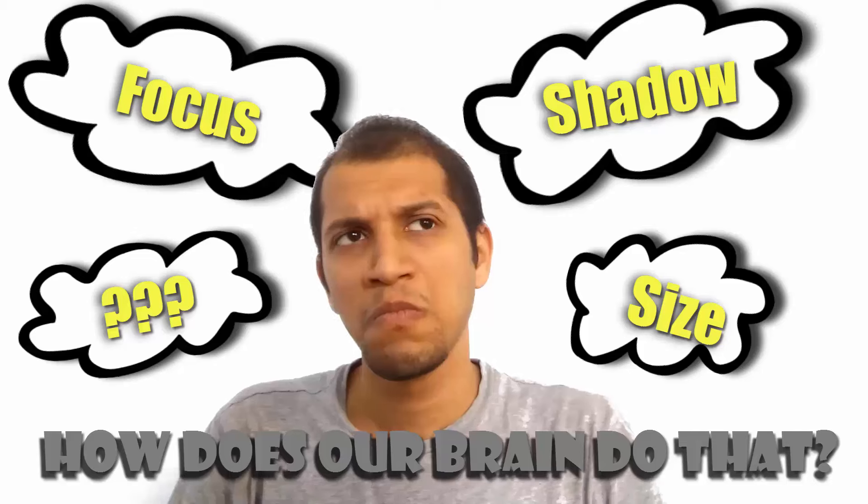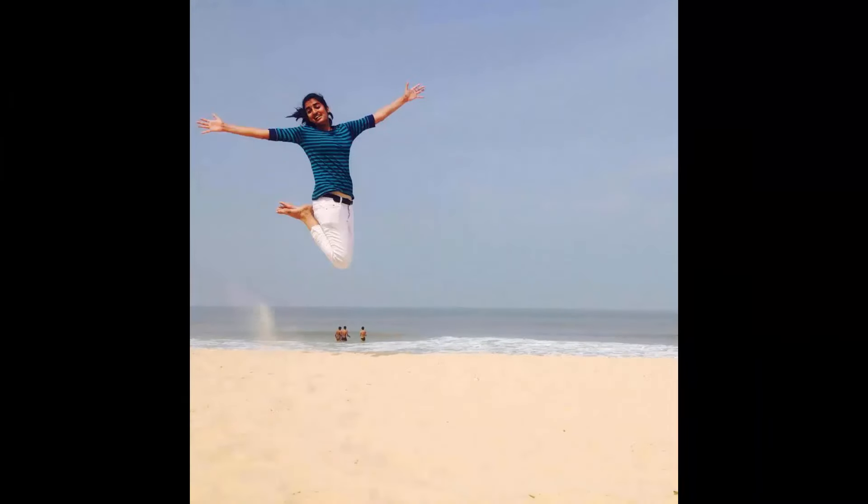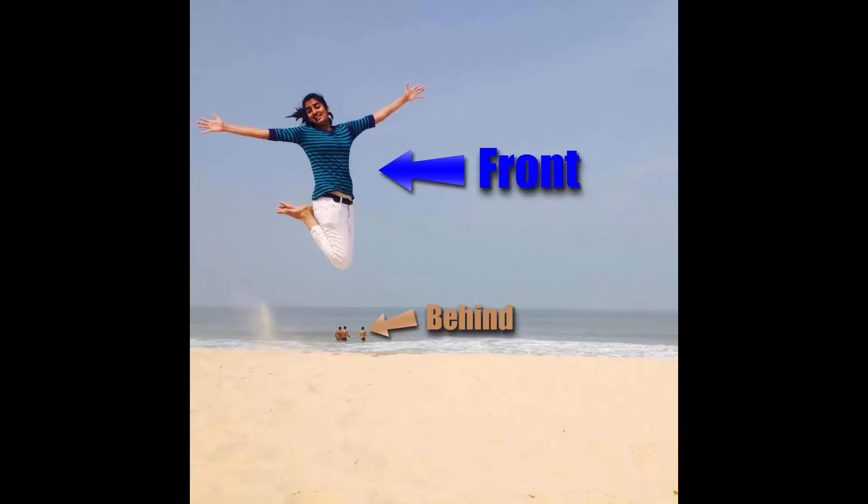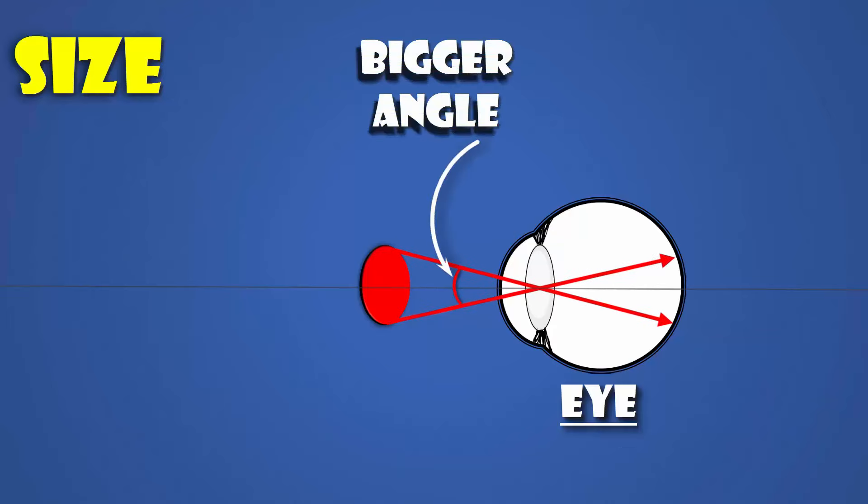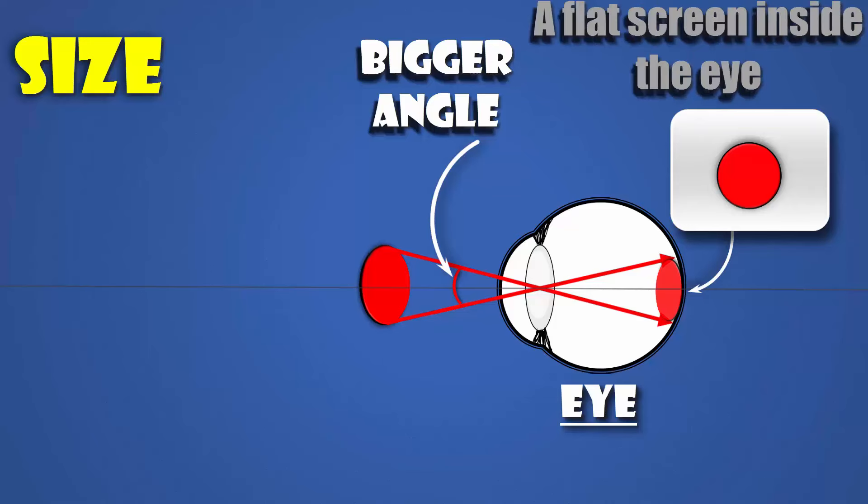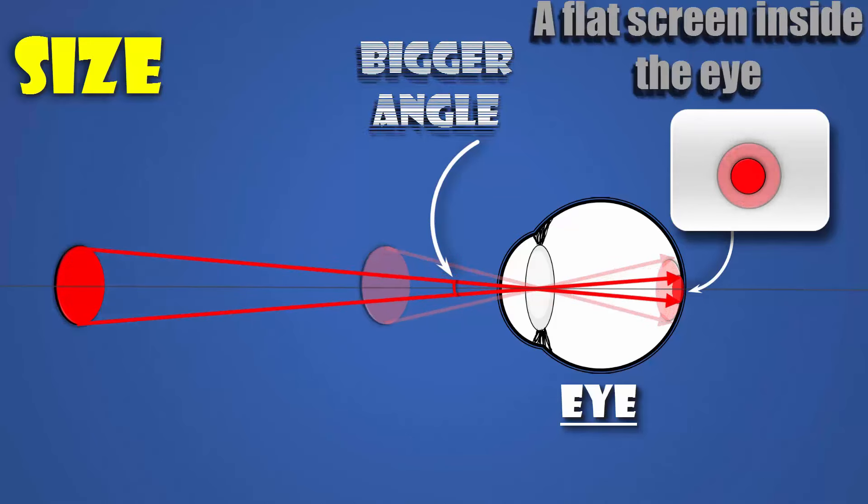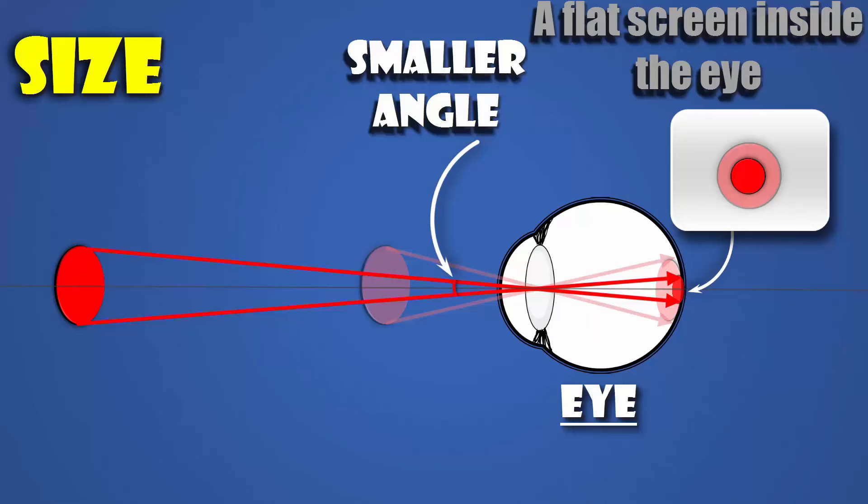For example, when you look at this picture, you know that this girl is actually in front and those dudes behind because of the relative size difference. Because of the way nature works, any object close to your eyes makes a bigger angle, producing a bigger image at your retina, which is basically a flat screen compared to an object farther away.